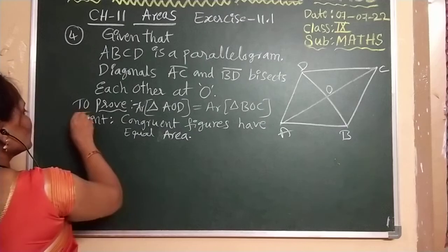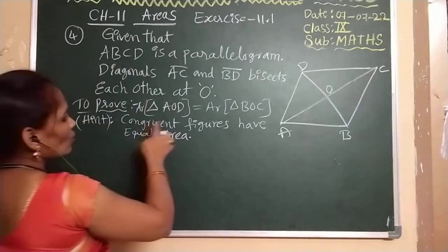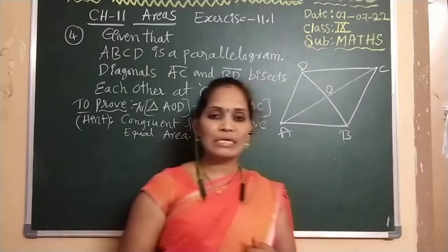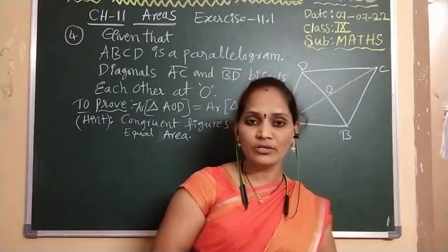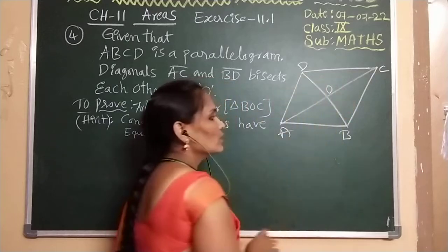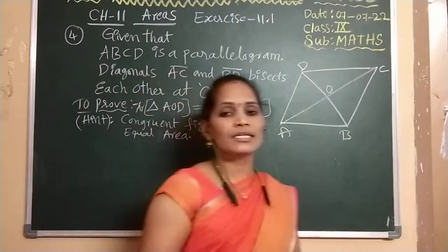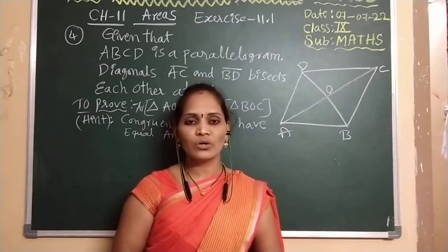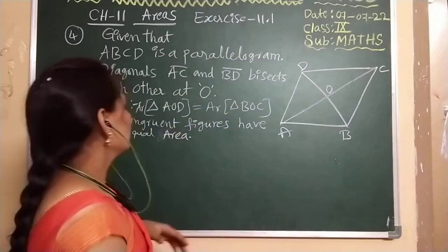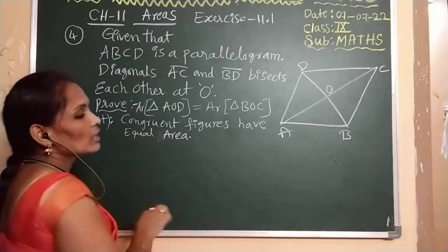One more thing — a hint is given in the question itself: congruent figures have equal area. Based on this hint, we just need to prove that the given triangles AOD and BOC are congruent. If you prove these two triangles are congruent, then automatically we can say that the areas of the two triangles are also equal. So we should show that the triangles are congruent, and then we can write that they have equal area.